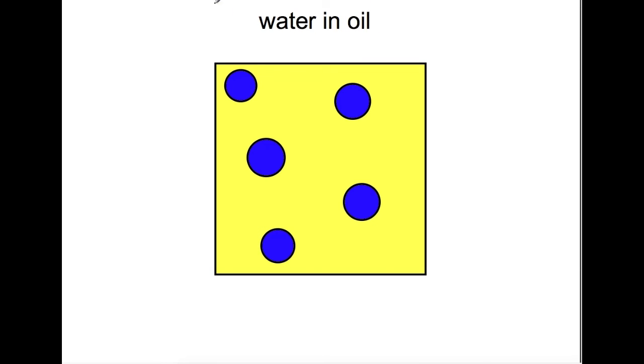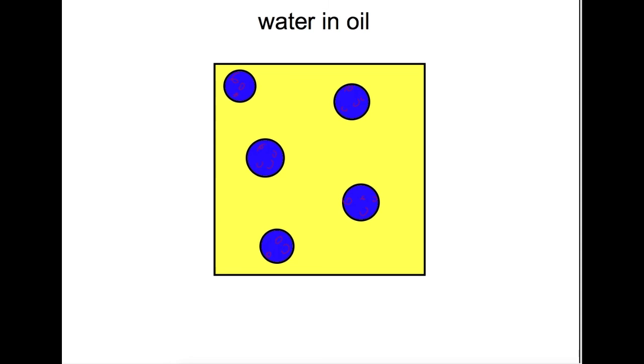Where the polar parts will remain inside the droplets of water and the non-polar parts, the fatty acid chains, will stick out into the oil. Again creating droplets that will not stick together, and therefore you will not form layers and you won't get separation.